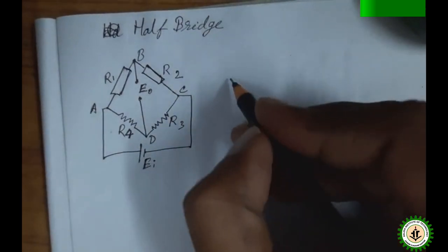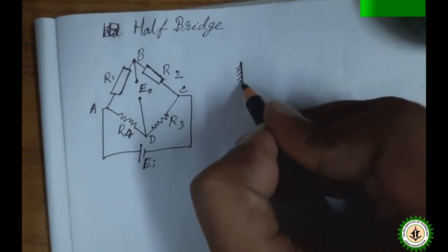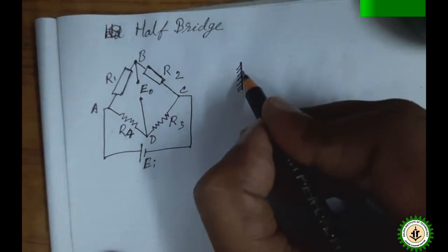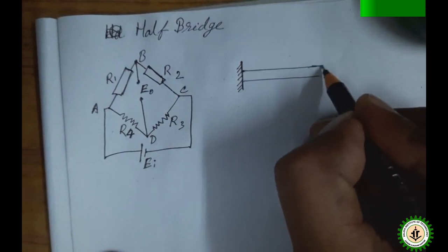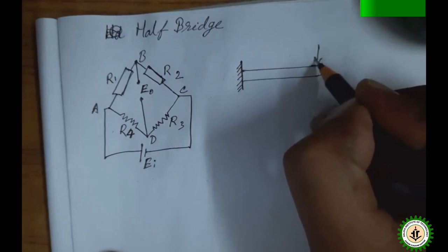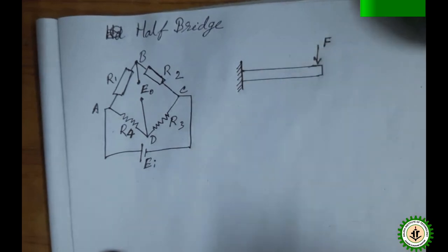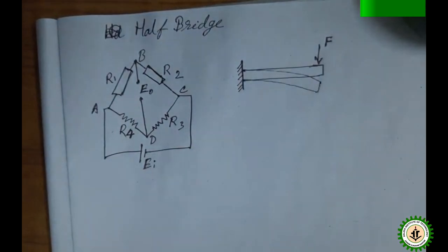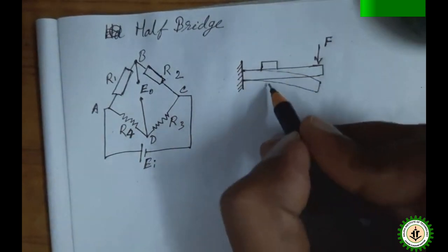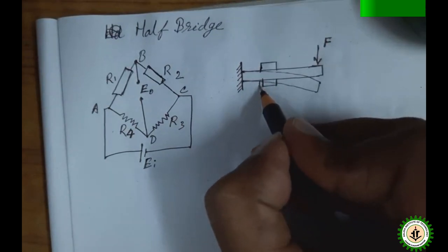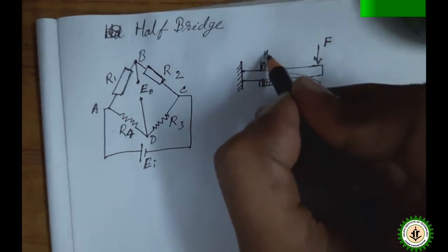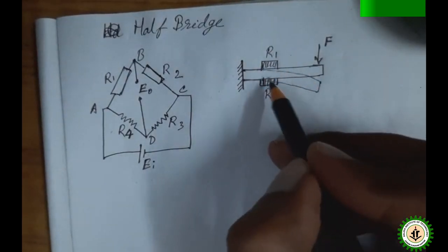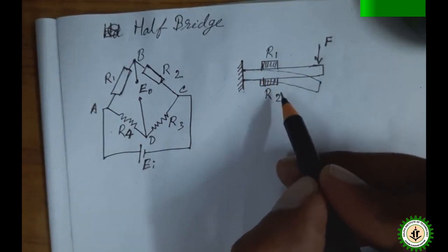This configuration is used where we have two equal and opposite strains on a surface. Consider a cantilever beam with force applied downward — the beam bends. We install two strain gauges: R1 on the upper surface (under tensile force, so it elongates) and R2 on the lower surface (under compressive force, so it is compressed).